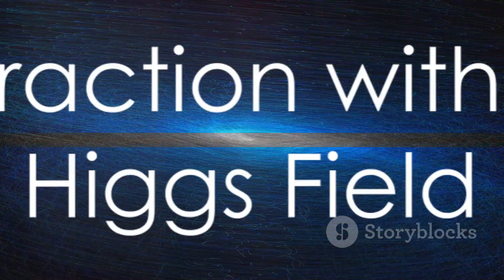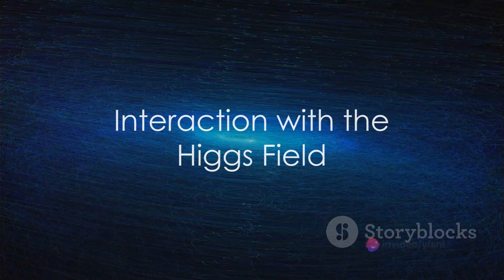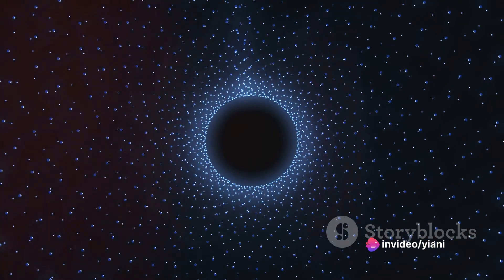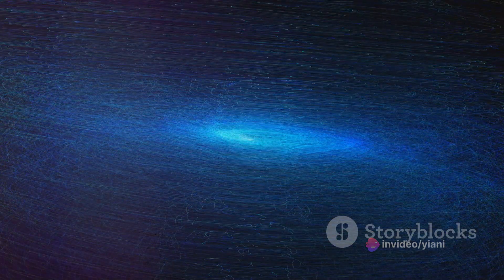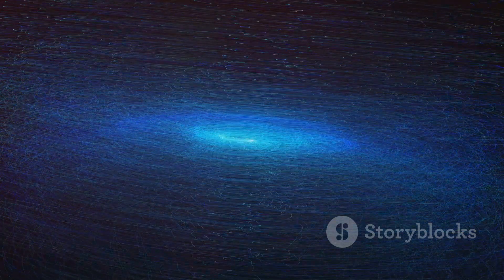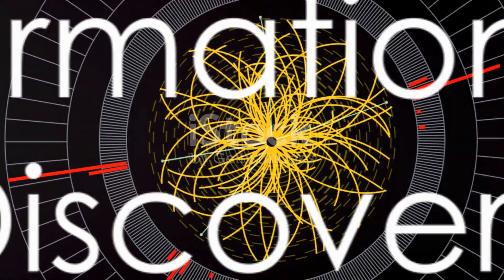When an elementary particle interacts with the Higgs field, there's a kind of drag or resistance that slows it down. This resistance is what we perceive as mass. The more the particle interacts with the Higgs field, the greater its mass.